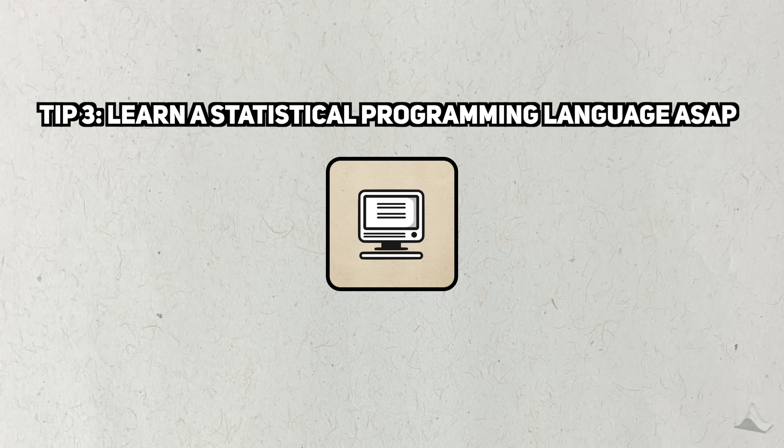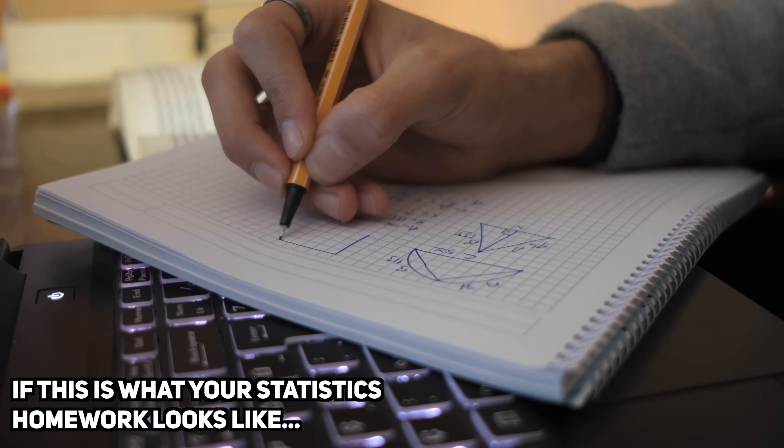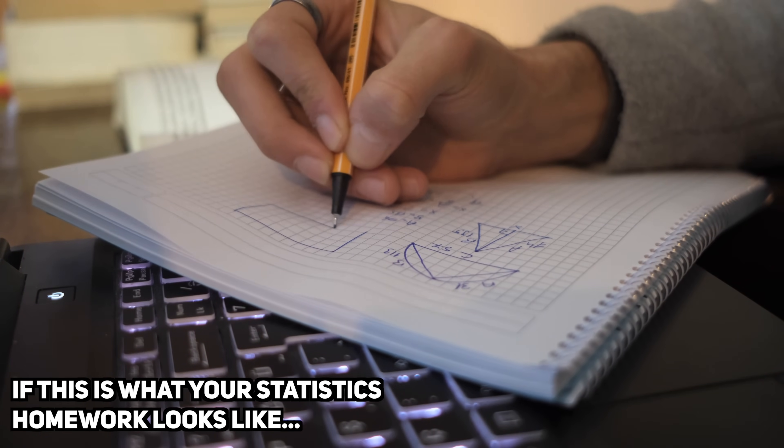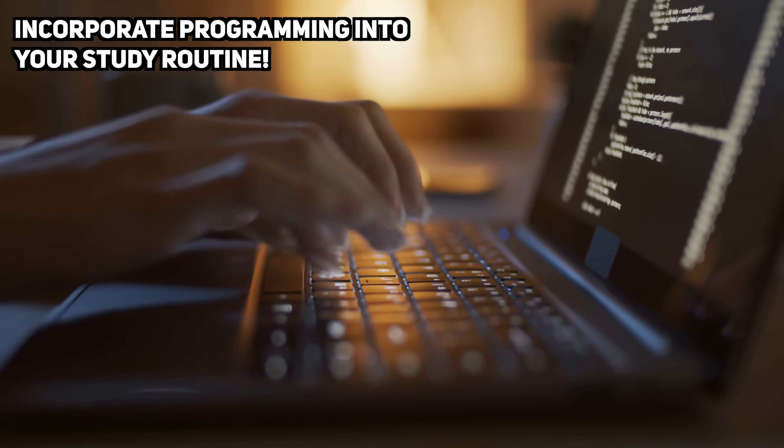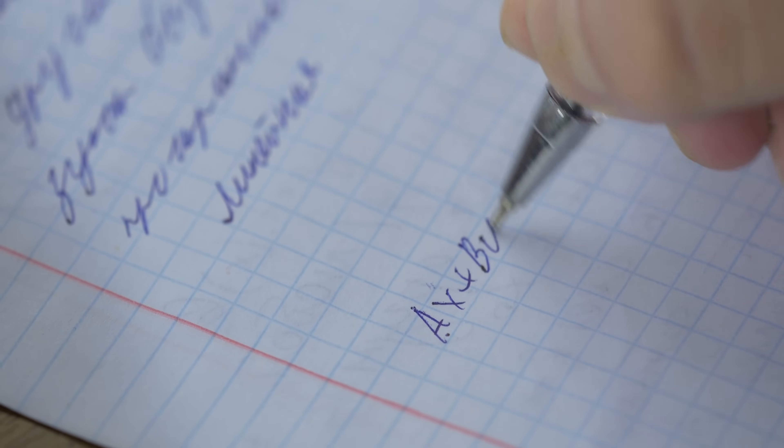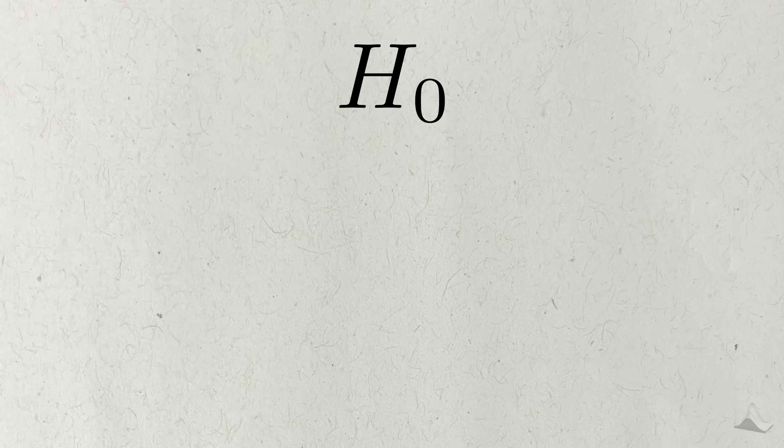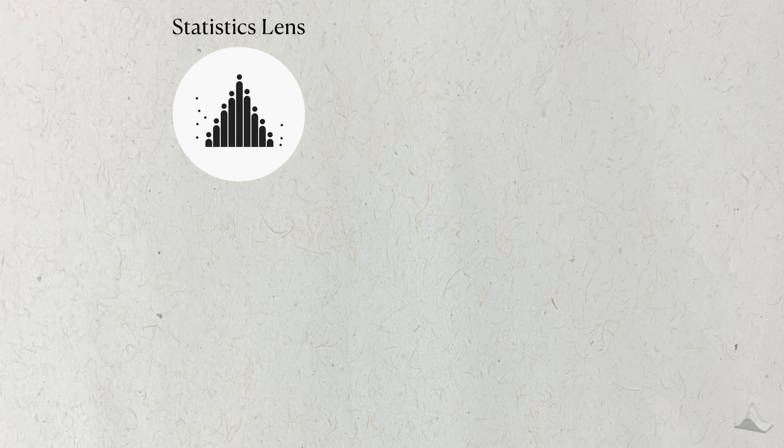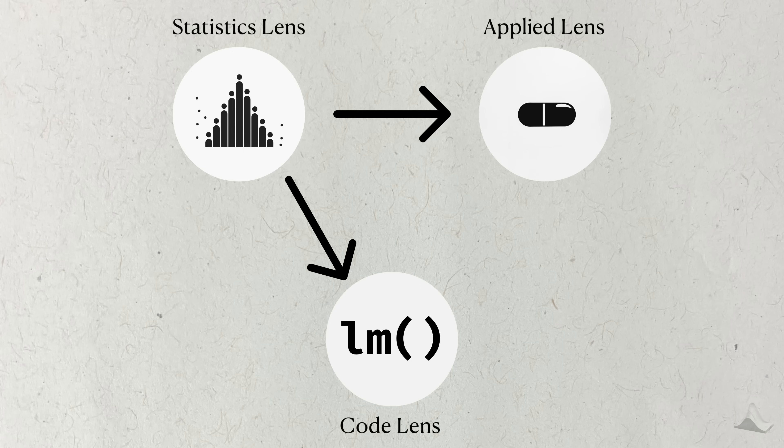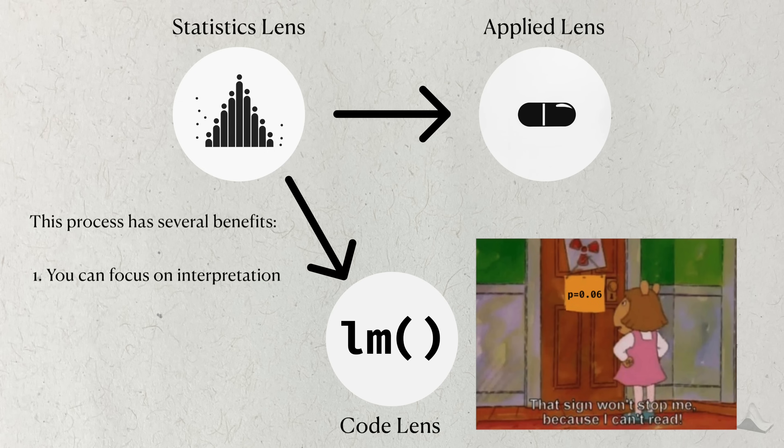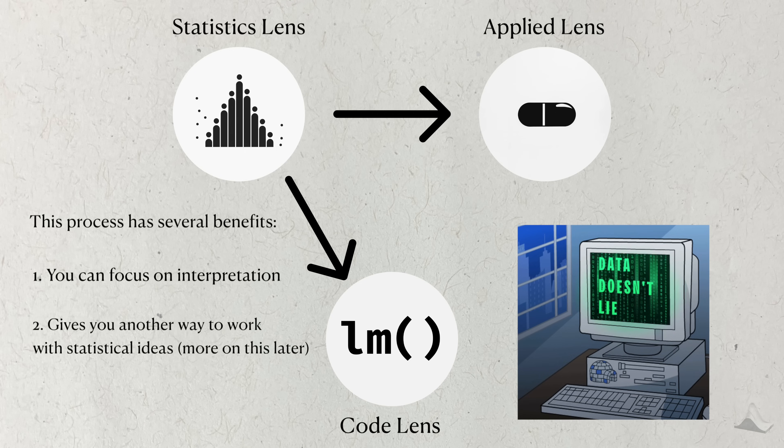Tip three: learn a statistical programming language ASAP. If you're in a statistics class and most of your studying is dealing with proofs or hand calculations, I highly recommend that you incorporate programming into your study routine. Nowadays, it's uncommon for statistics to be done by hand. If you need to conduct a hypothesis test or run a regression, you're most likely going to do it with code. My first tip recommended that you make it a habit to translate statistical concepts into terms that you understand. This tip recommends that you translate the concepts into the language of code. There are lots of benefits for translating statistical procedures in the code. The first one is that you can focus more on actually interpreting the results rather than doing rote calculations. Another benefit is that code gives you an alternative way to interact with statistical ideas in a more concrete way, which we'll get to in the next tip.